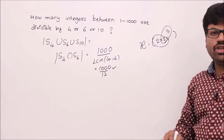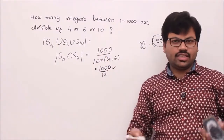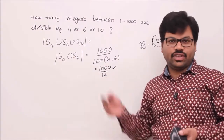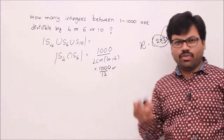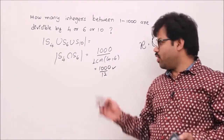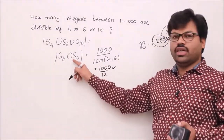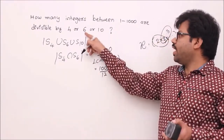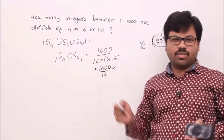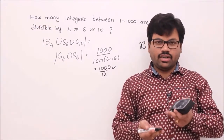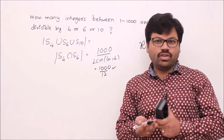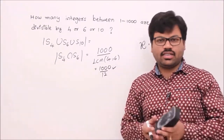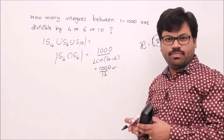In the same way, compute |S4 ∩ S10| using LCM(4, 10), |S6 ∩ S10| using LCM(6, 10), and |S4 ∩ S6 ∩ S10| using LCM(4, 6, 10). Apply these in the inclusion-exclusion formula to get the final answer.